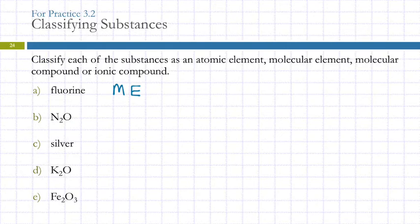N2O. Element or compound? Compound. You should be able to tell that because there's two capital letters there. Ionic or molecular? Molecular. Look at the first element. Is it a metal? Nope. Is the second element a metal? Nope. So this is molecular compound.